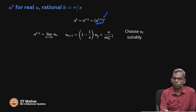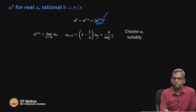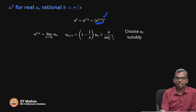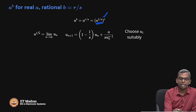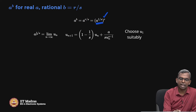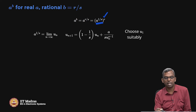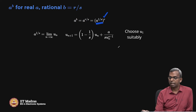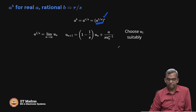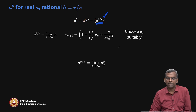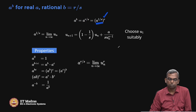In the s-th root case, starting suitably, the sequence will converge to the one proper s-th root. So I define a^(1/s) as the limit of a sequence of numbers, and that is a crucial idea. This is my recursion for the s-th root. And a^(r/s) is simply the limit as n tends to infinity of u_n^r.